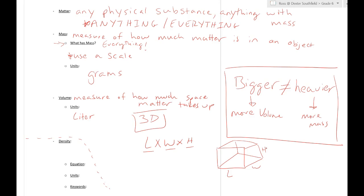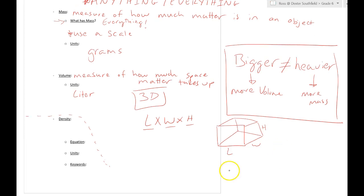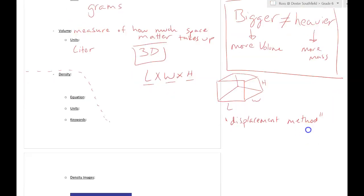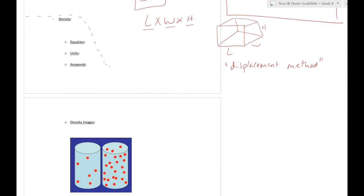If it's an irregularly shaped object, what I would do is something called the displacement method. You read about this in that first reading. You can ignore these images over here for the time being. You have a known volume of water—here's my cylinder of water.